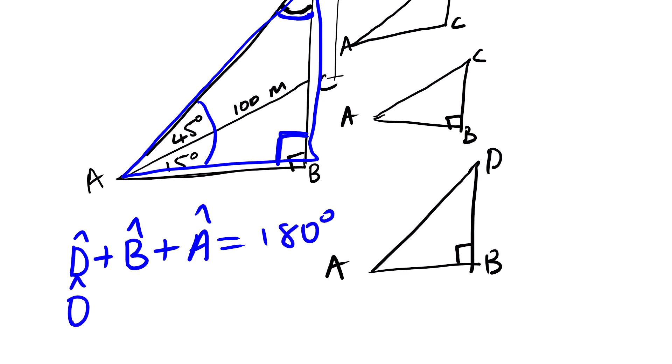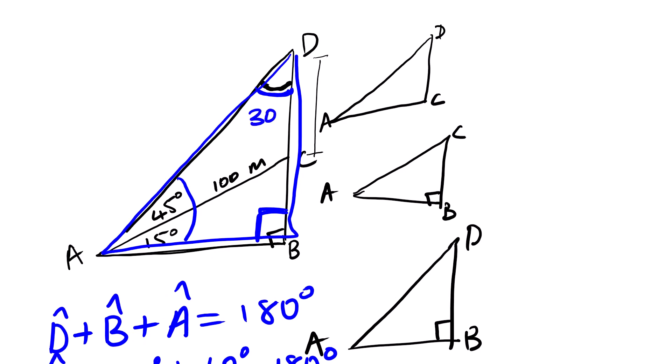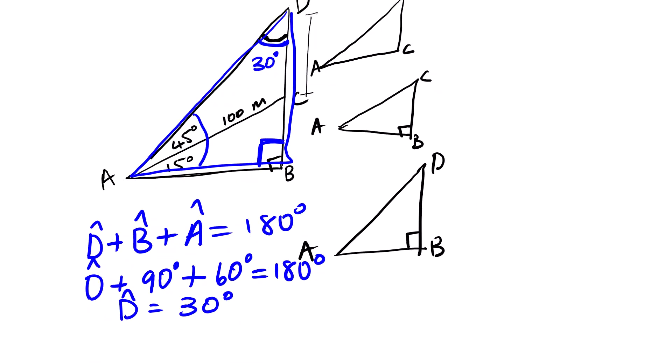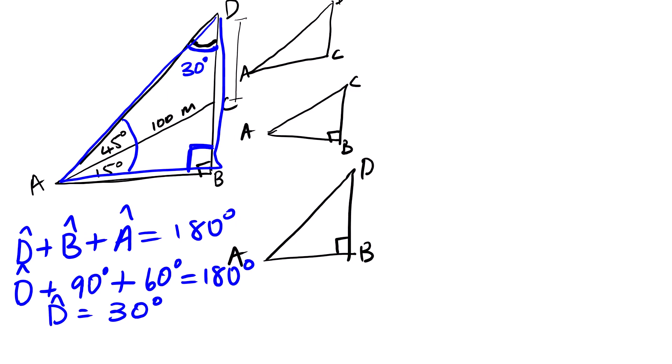So angle D plus B, it's 90 degrees plus A, it's 60 degrees, equals to 180. So we are going to have 80 degrees here. And then from here we can start applying the law of sine rule.